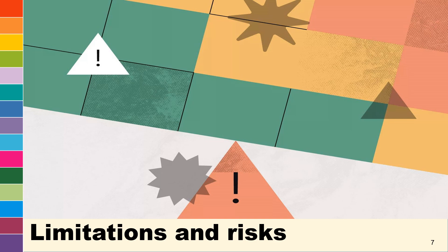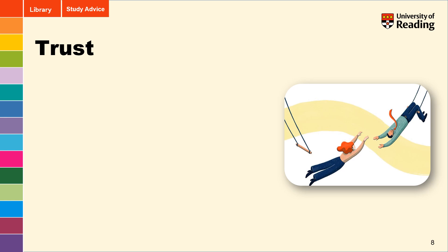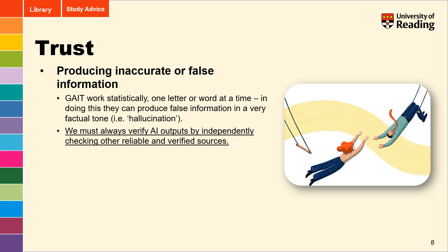With all of these possible options available to us, we must take serious consideration of the all too real limitations and risks that exist when using generative AI tools in our study. A significant factor to always consider is that of trust and verifiable information. Generative AI tools are known to produce inaccurate or false information. As GATs work statistically one letter or word at a time, they can produce false or incorrect information in a very factual tone. This is referred to as hallucination. Because of this, we must always verify AI outputs by independently checking other reliable and verified sources.